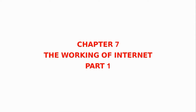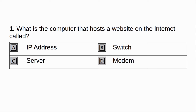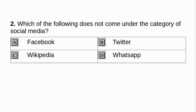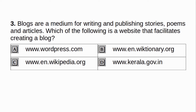Chapter 7: The Working of Internet, Part 1. What is the computer that hosts a website on the internet called? A. IP Address. B. Switch. C. Server. D. Modem. Answer: C. Server. Which of the following does not come under the category of social media? A. Facebook. B. T12. C. Wikipedia. D. WhatsApp. Answer: C. Wikipedia.